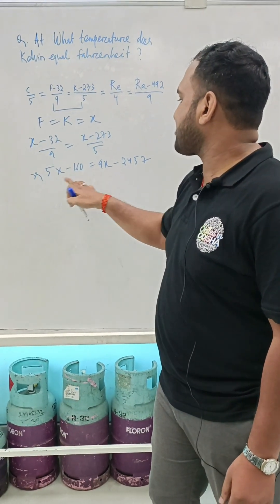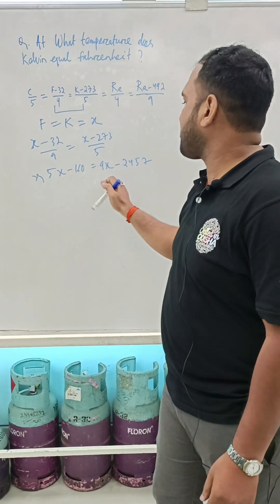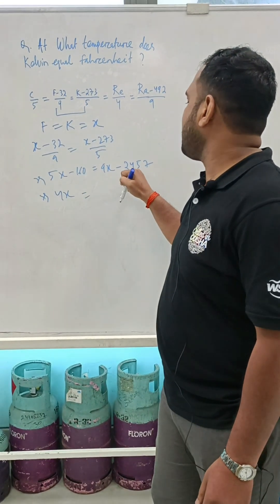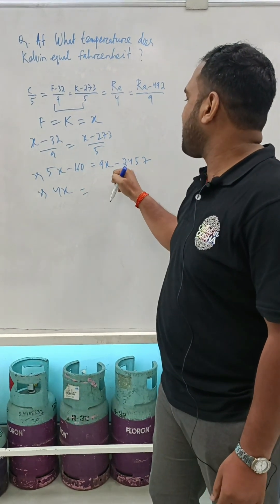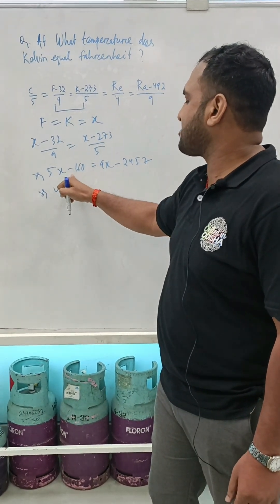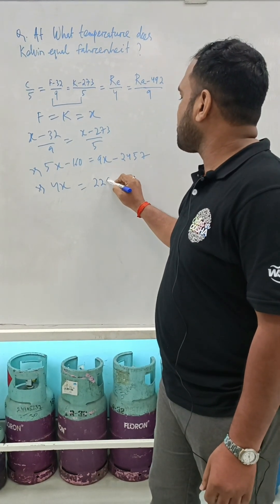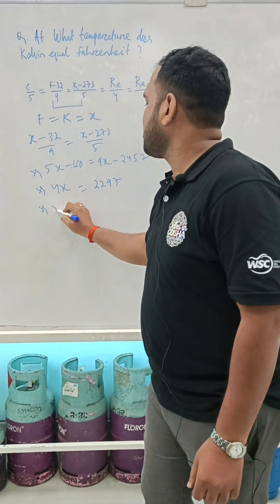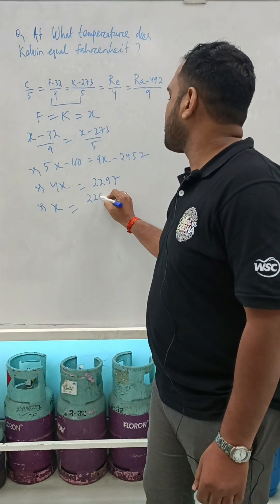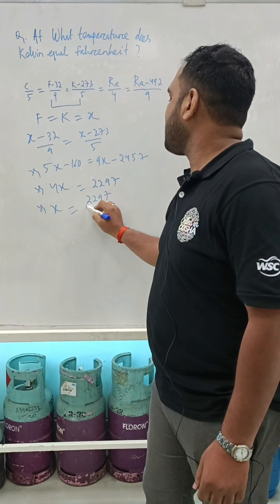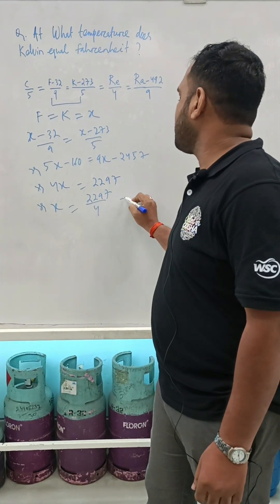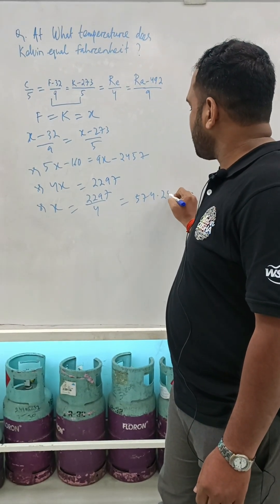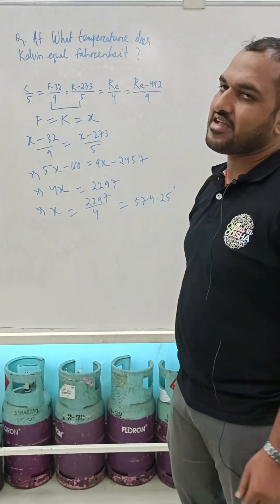Rearranging: 9X minus 5X gives 4X, and 2457 minus 160 gives 2297. So X equals 2297 upon 4, which gives the answer as 574.25 degrees.